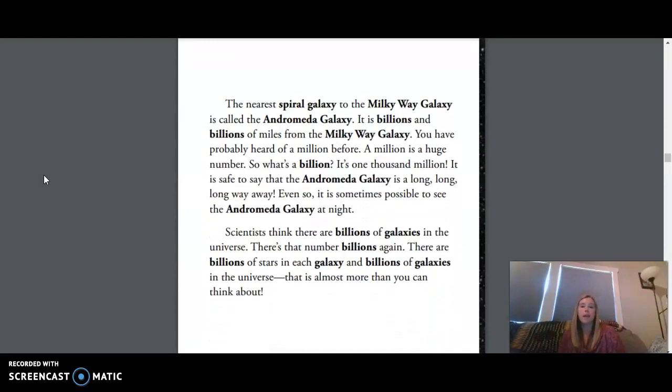The nearest spiral galaxy to the Milky Way galaxy is called the Andromeda galaxy. It is billions and billions of miles from the Milky Way galaxy. You've probably heard of a million before. A million is a huge number. So what's a billion? It's one thousand million.